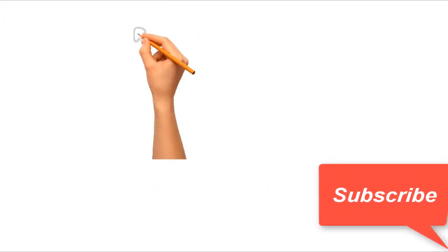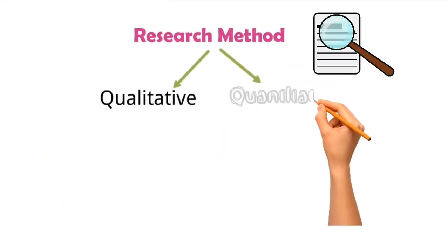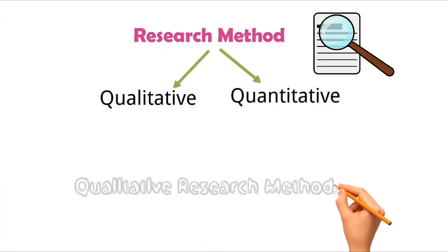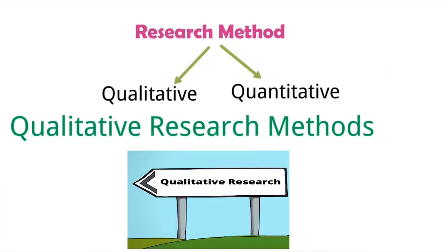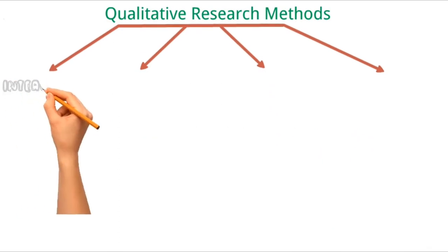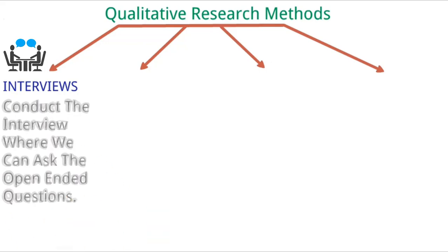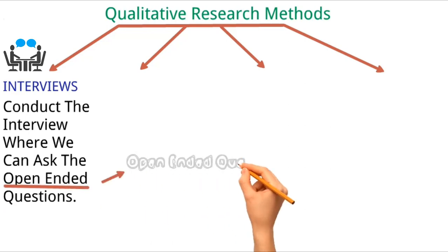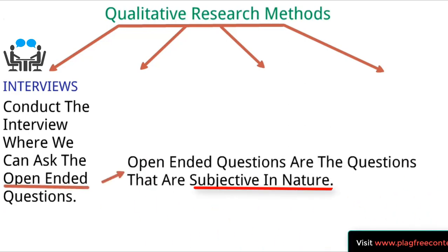Now let's move to the research methods involved in qualitative and quantitative analysis. So firstly we will talk about qualitative research methods. There are different research methods involved in it. Firstly, interviews — in qualitative research methods we can conduct interviews where we can ask open-ended questions. Open-ended questions are questions that are subjective in nature.